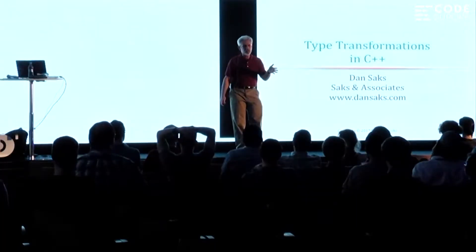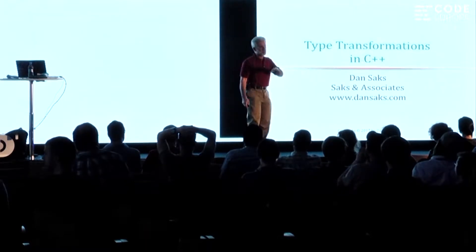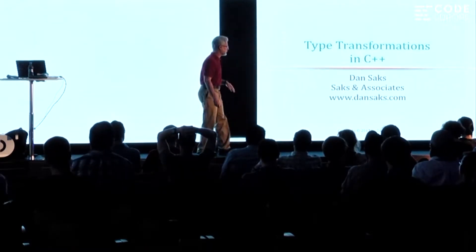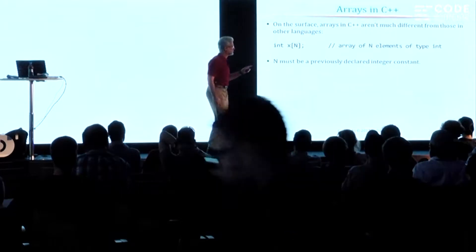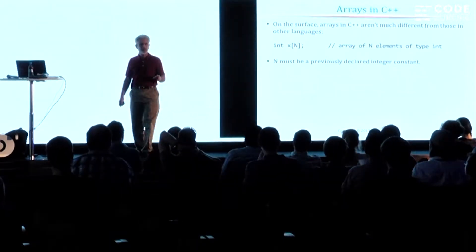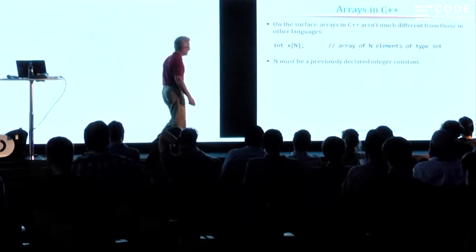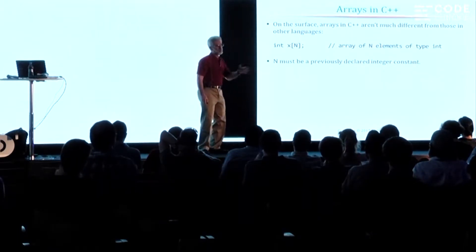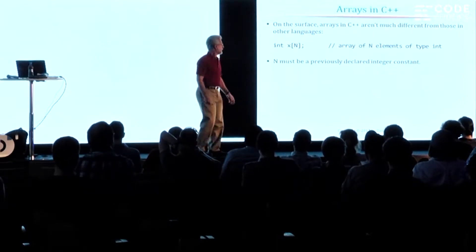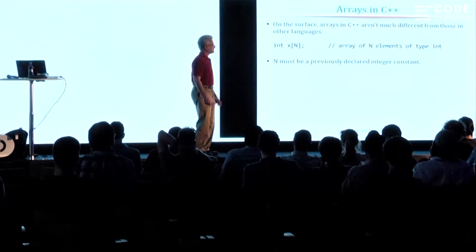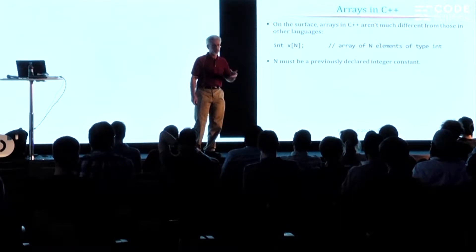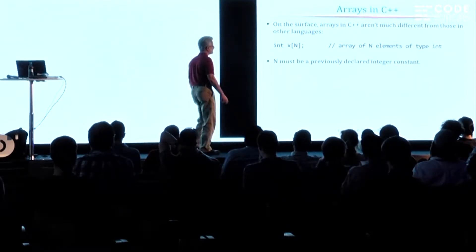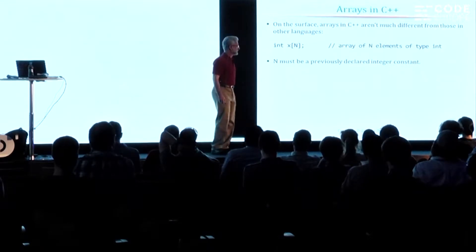I'm going to start out by giving you a fairly concrete example to illustrate some of the issues I'm going to discuss before I tell you what the general picture is, because I think this little intro will make the concepts a little bit more concrete. So I'm going to start with something that on the surface looks very mundane: I want to talk about arrays. Arrays in C++ are pretty much the way they are in C, and so not only did C++ inherit all the good properties of it, but a fundamental confusion about the true nature of arrays in C and C++.